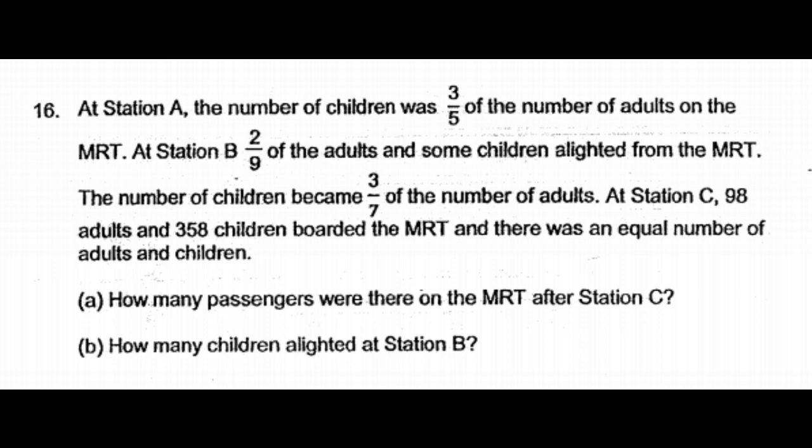At Station A, the number of children was three-fifths the number of adults on the MRT. At Station B, two-ninths of the adults and some children alighted from the MRT. The number of children became three-sevenths of the number of adults. At Station C, 98 adults and 358 children boarded the MRT, and there was an equal number of adults and children. Part A: how many passengers were there on the MRT after Station C? Part B: how many children alighted at Station B? This is a five-mark question.